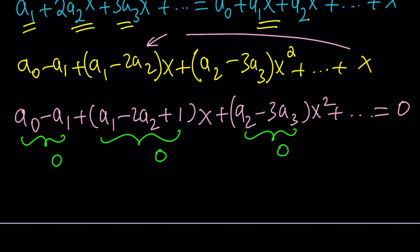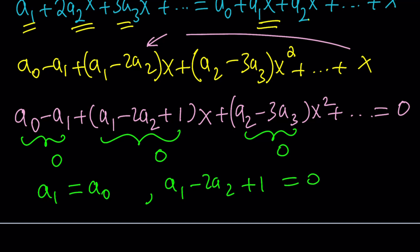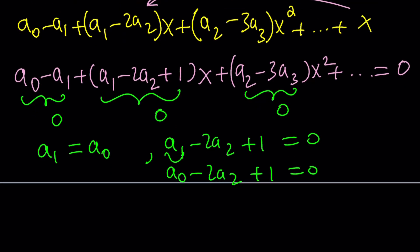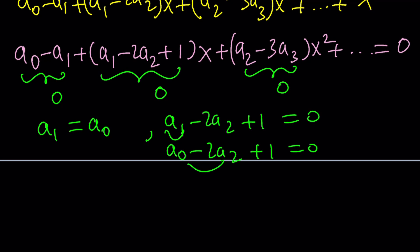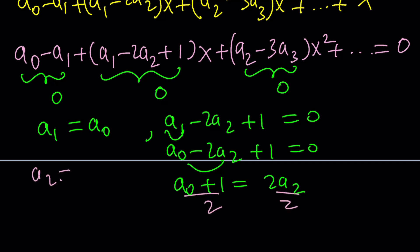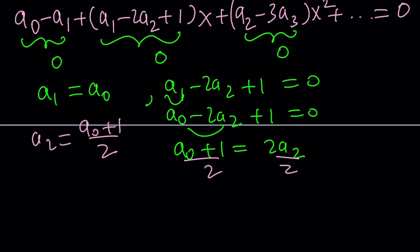From the first equation, a sub 0 and a sub 1 are equal, so I'll write a sub 1 as a sub 0. From the second equation, a sub 1 minus 2 a sub 2 plus 1 equals 0. Replacing a sub 1 with a sub 0, I get a sub 0 minus 2 a sub 2 plus 1 equals 0. Isolating a sub 2 and dividing both sides by 2 gives a sub 2 equals (a sub 0 plus 1) divided by 2.